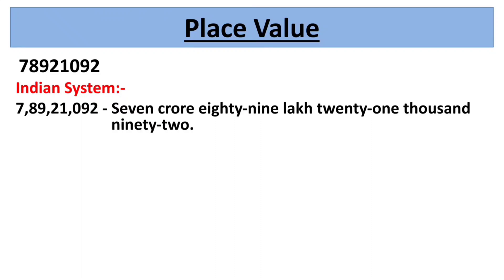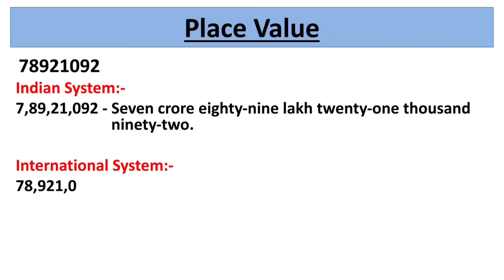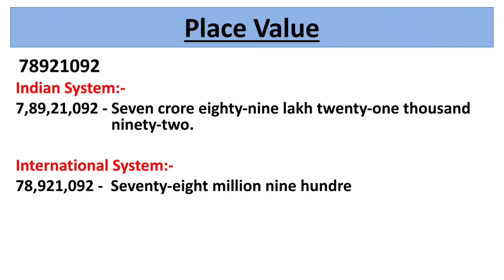In the international system, periods are divided according to the rule 3:3:3. Starting from the right, the first comma is placed after 3 digits, and the next commas are also placed after every 3 digits. Hence we get 78,921,092.